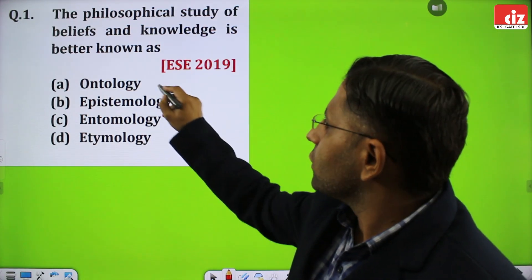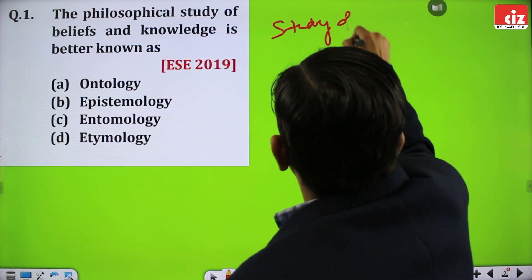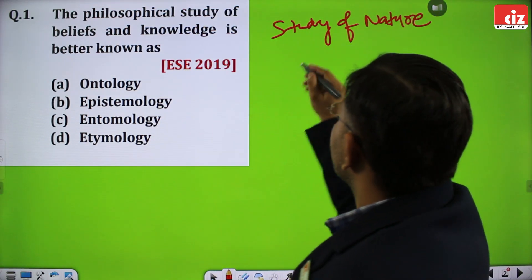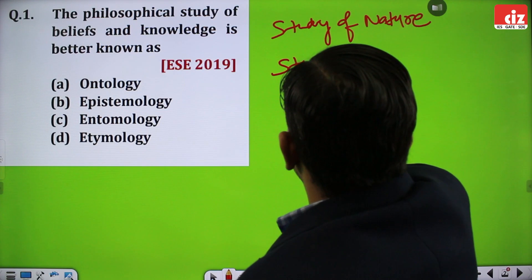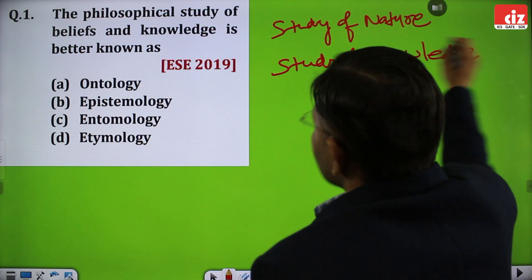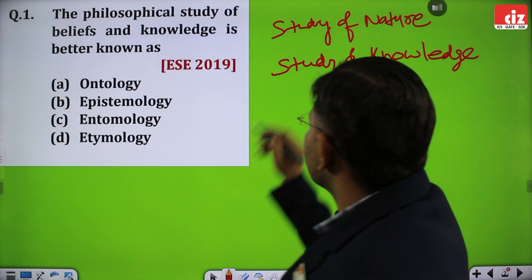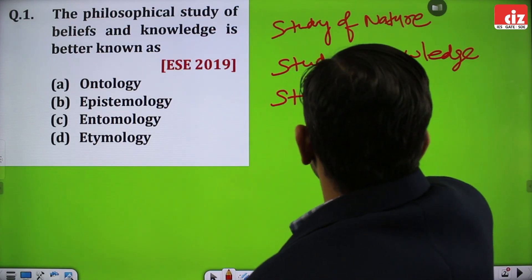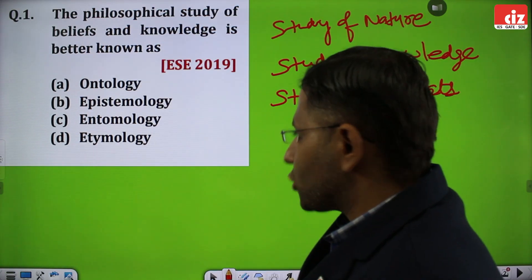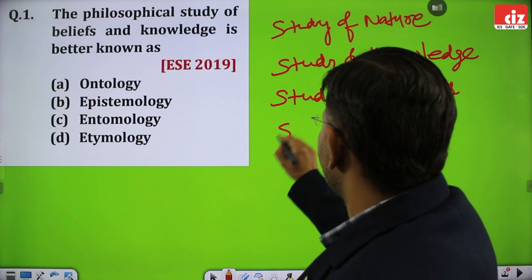The first term is ontology, which is related to the study of nature. The second one is epistemology, which is related to the study of knowledge. The third one is entomology — this is a term from biology and is related to the study of insects. And the last one is etymology, which is related to the study of the history of words — how words were generated for the first time.